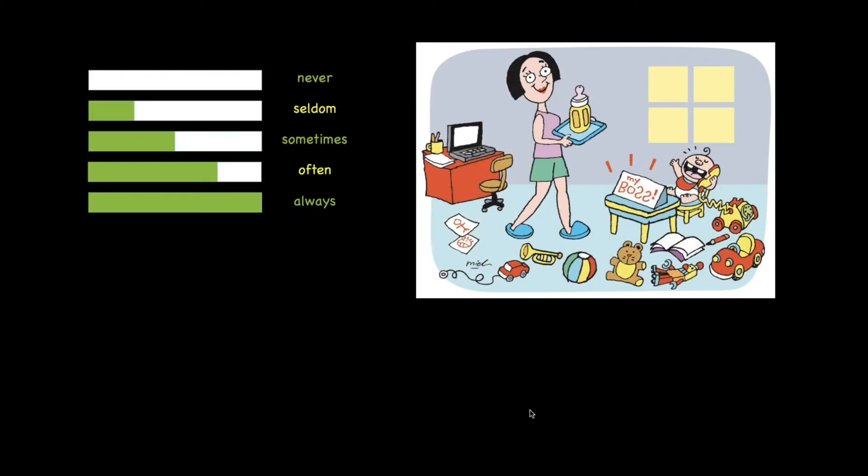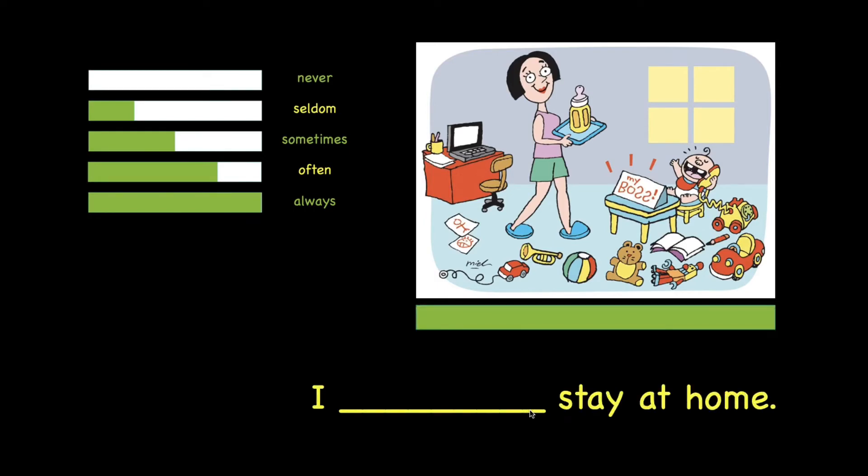All right. Let's take a look at some of the examples. Number one. I blank stay at home. So if we take a look at this bar, it shows a full bar. So which word or which adverb of frequency should we use? Should we use never? Seldom? Sometimes? Often? Or always? Correct. The answer is always. I always stay at home. Did you stay at home these few days? Please?